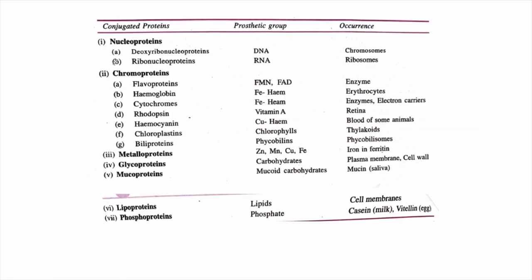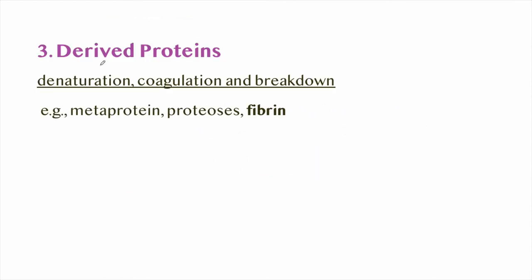Examples of conjugated proteins: nucleoproteins have DNA or RNA as the prosthetic group (non-protein part). Flavoproteins have FMN or FAD as the prosthetic group. In hemoglobin, heme is the non-protein part or prosthetic group. Derived proteins are obtained from proteins through denaturation, coagulation, and breakdown. Examples are metaprotein, proteoses, and fibrin. Fibrin is formed from the precursor fibrinogen, which is an asymmetric plasma protein.